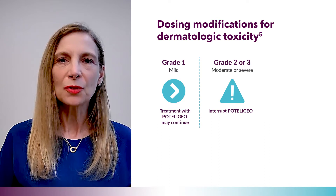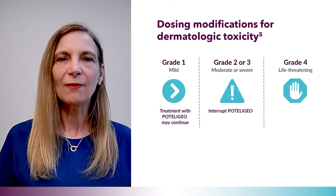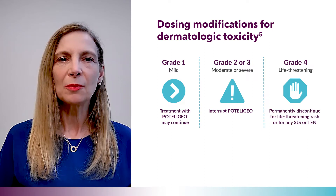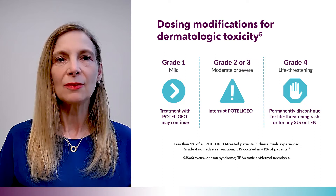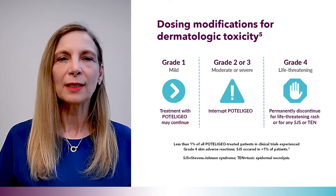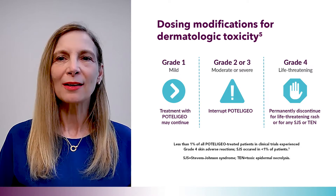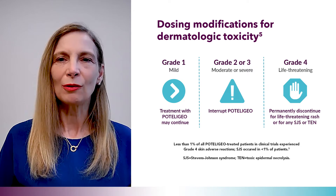If rash improves to grade 1 or less, Poteligio may be resumed. If life-threatening or grade 4 rash is suspected, stop treatment and do not resume it unless Stevens-Johnson syndrome or toxic epidermal necrolysis have been excluded and the cutaneous reaction has been resolved to grade 1 or less.